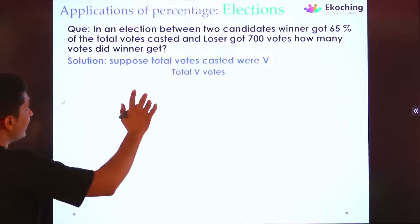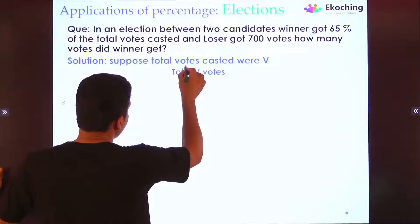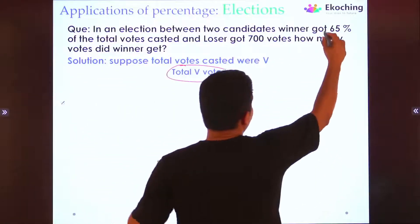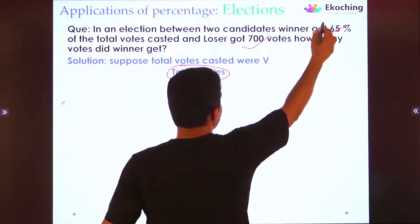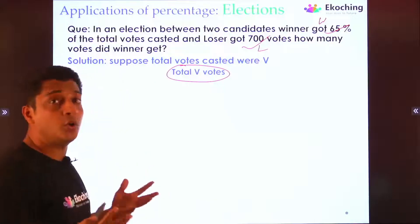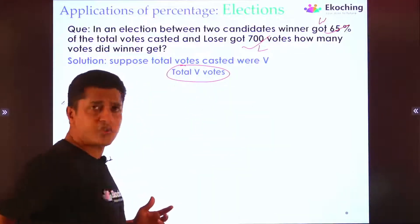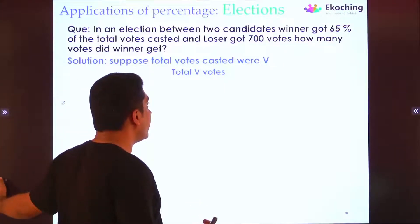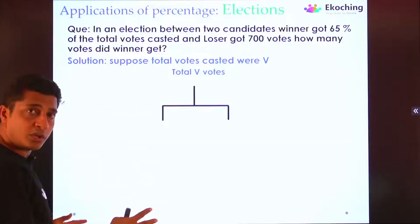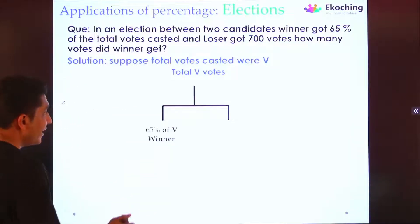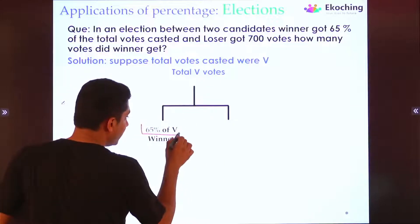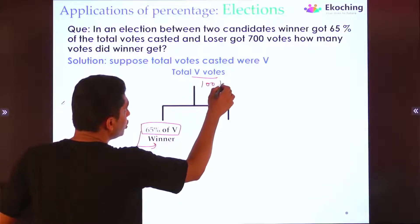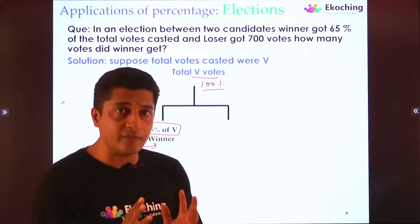Suppose the total votes cast were V. Out of total V votes, 65% went to the winner and the remaining 35% (that is 100 minus 65) went to the loser. We're told the loser received 700 votes. Any new quantity we assume, like V, will itself be 100%. So if total votes are 100%, then winner got 65% of V and loser got 35% of V, which equals 700.